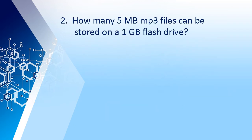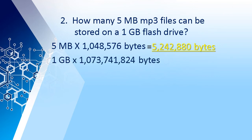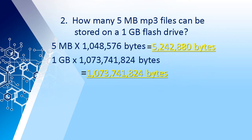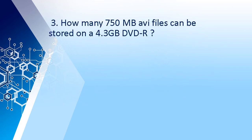Example number 2: How many 5 megabyte MP3 files can be stored on a 1 gigabyte flash drive? 5 megabytes times 1,048,576 bytes is equal to 5,242,880 bytes. 1 gigabyte times 1,073,741,824 bytes is equal to 1,073,741,824 bytes. 1,073,741,824 bytes divided by 5,242,880 bytes is equal to 204 MP3 files.